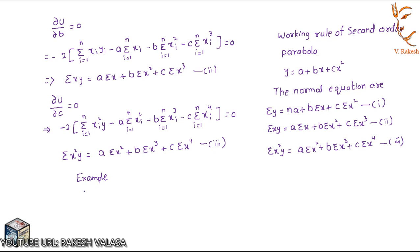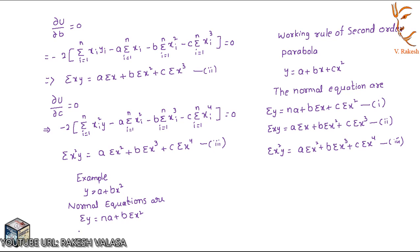For example, take y equal to a plus bx square. To write the normal equations: first, summation y equal to na plus b summation x square. Then, multiplying by summation x square: summation x square y equal to a summation x square plus b summation x cube.